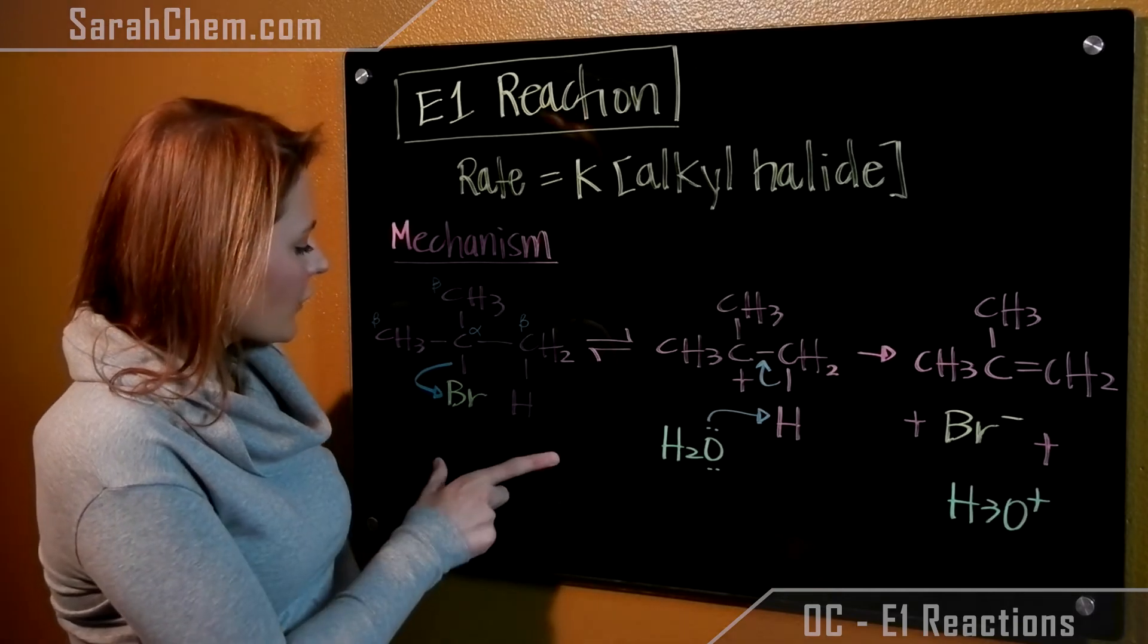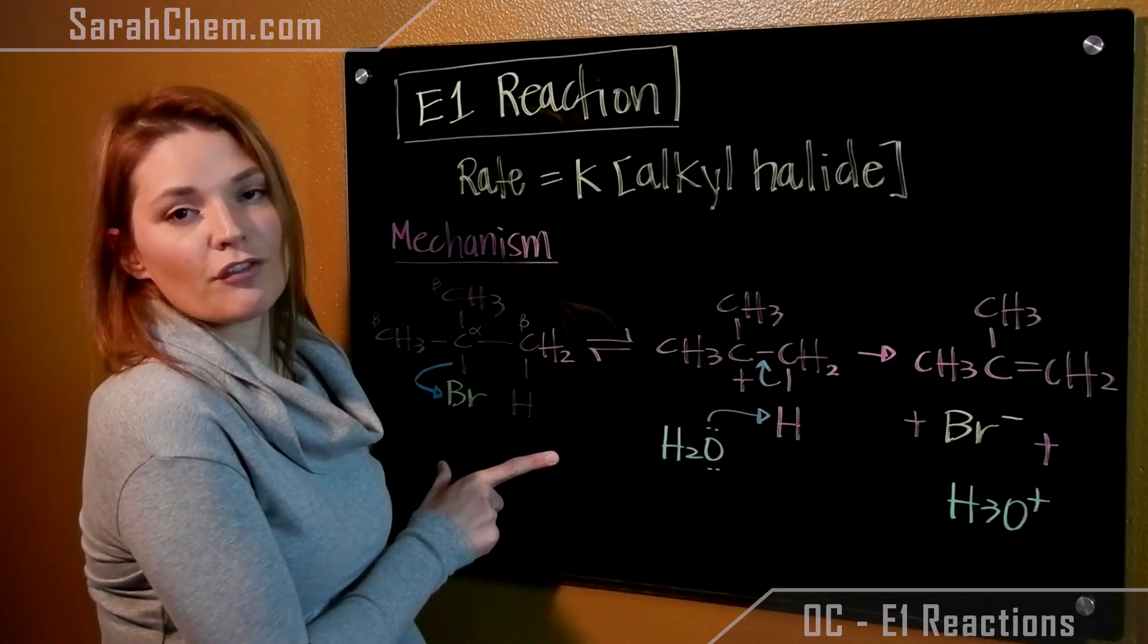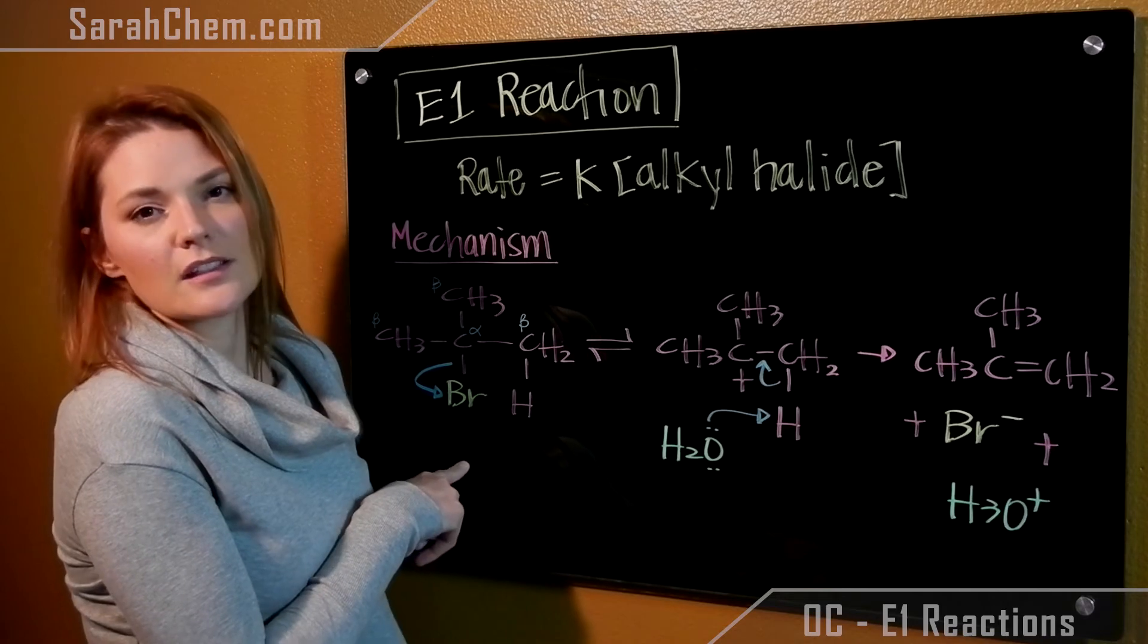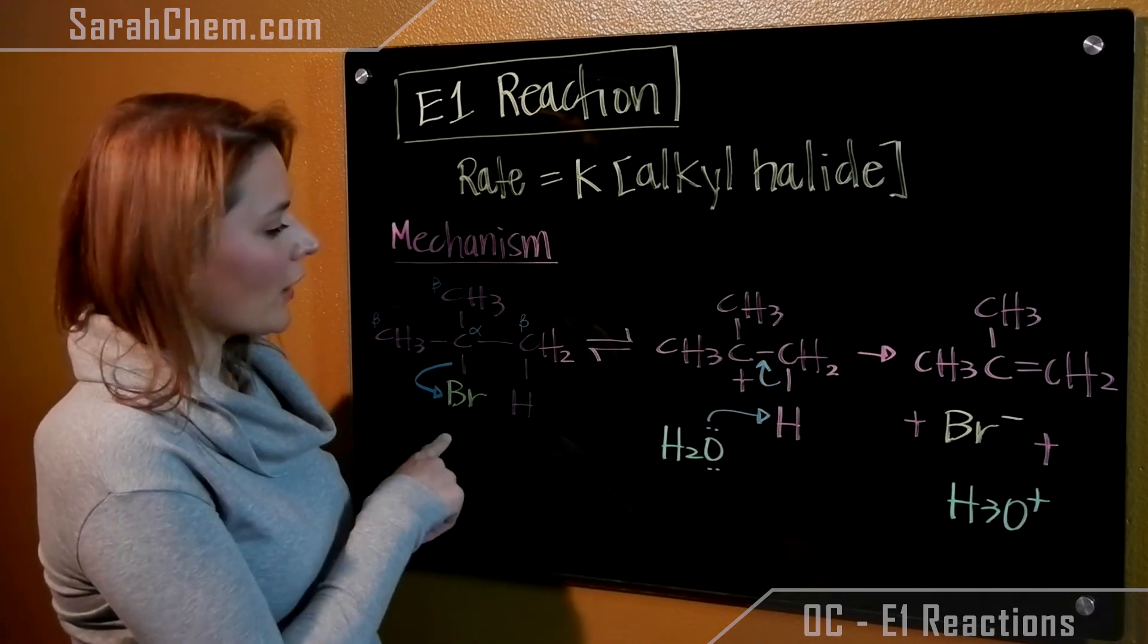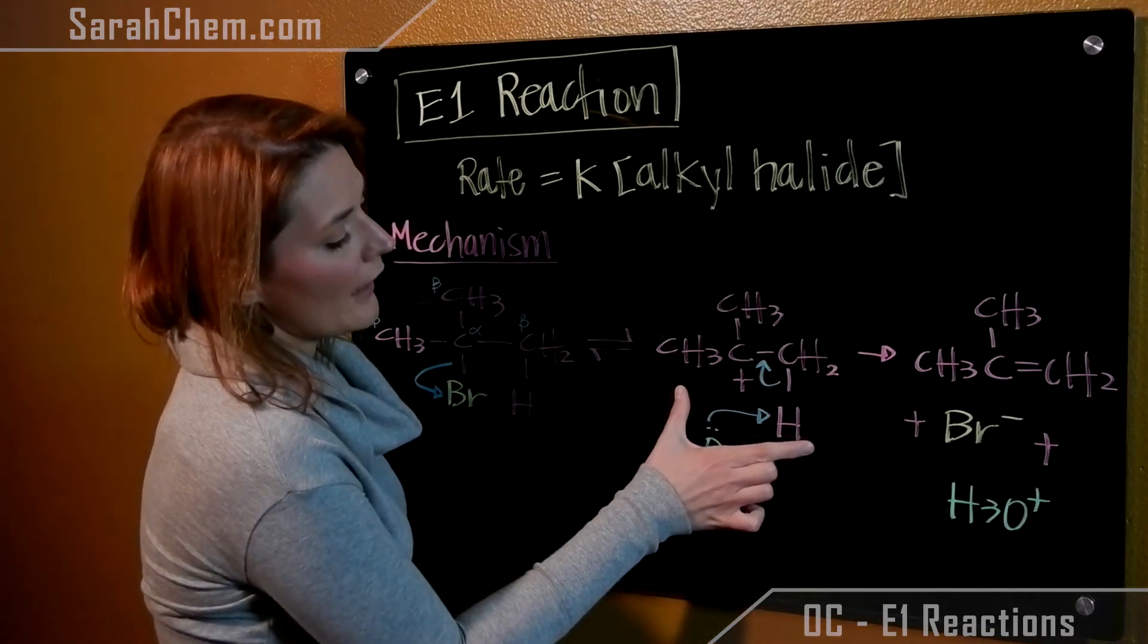So now in the very first step, with some facilitation from the solvent, our halogen group will leave. Hence it's called the leaving group. Upon its departure, we will form a carbocation.